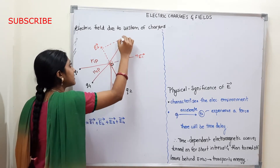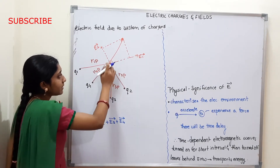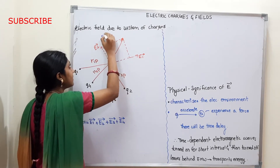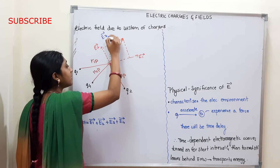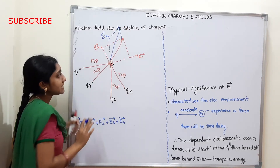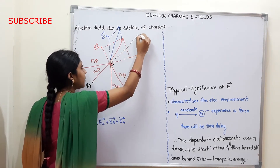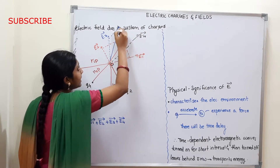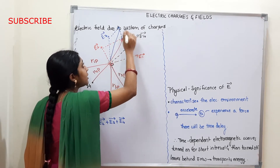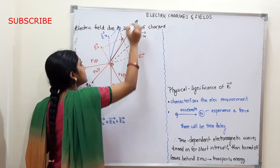This gives us the first resultant. Next, the electric field due to Q3 at P is E3. We complete this parallelogram to get the second resultant. Finally, the electric field due to Q4 is E4. We then combine these to get the final resultant. This gives us the E-Net vector.